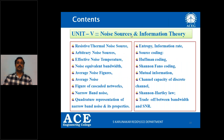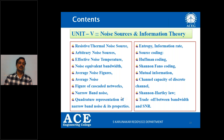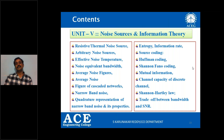Unit 5 covers noise sources and information theory. Half of the unit contains noise sources and the remaining half contains information theory. We'll cover basic types of noises, relations with respect to noise sources, and the equations required to analyze noise. Then we'll enter the second part covering information theory.